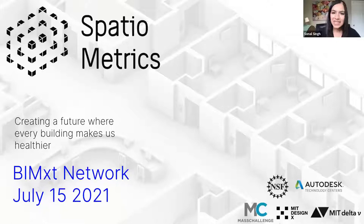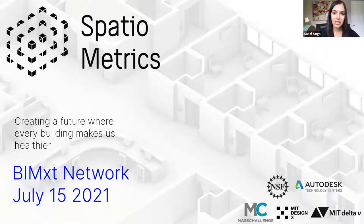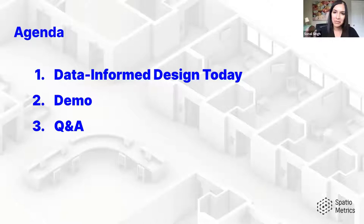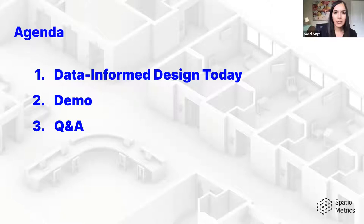I'm part of a team called Spatial Metrics, a cross-disciplinary team out of MIT. We come at this from views of architecture, data, health, and wellness. The team is united around the idea that if we have better access to data during the design process, we can fundamentally improve the ways that buildings affect our health and well-being.